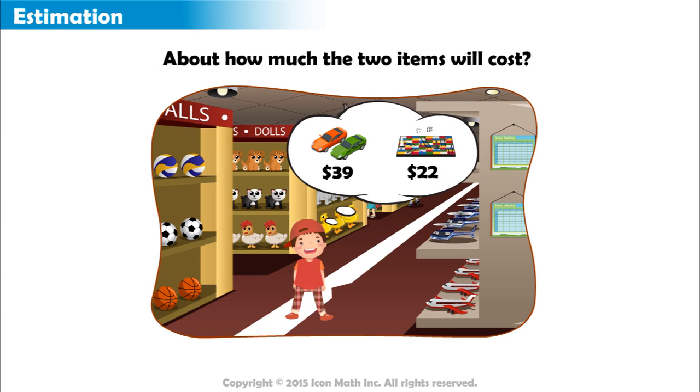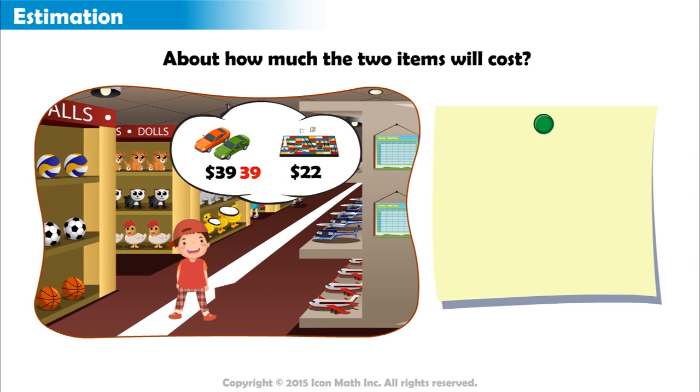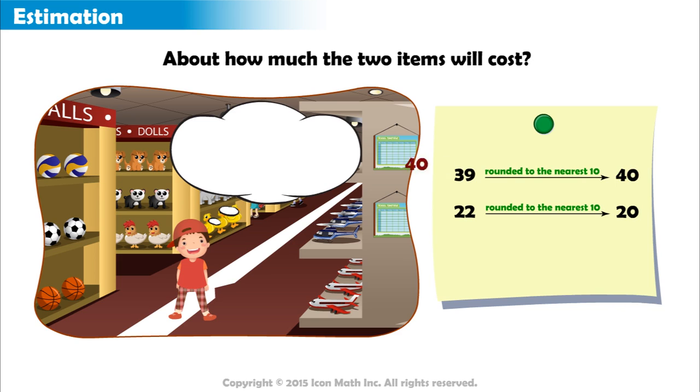By rounding the numbers, we can help Cody quickly estimate how much money he will have to pay. We round $39 and $22 to the nearest $10 to get $40 and $20. 40 plus 20 is 60, so we estimate that the cost of the toys will be close to $60.